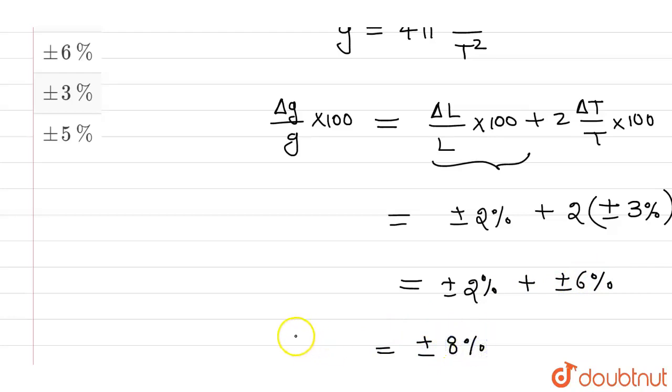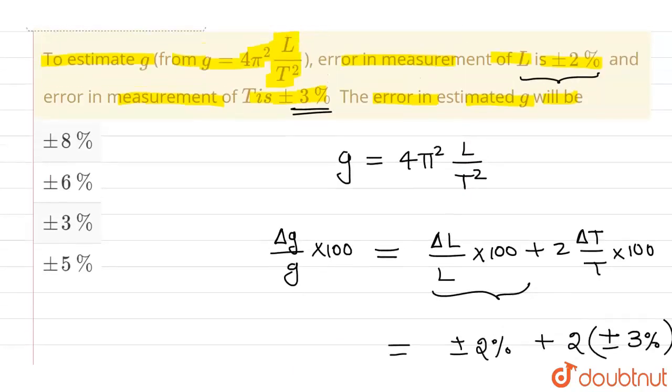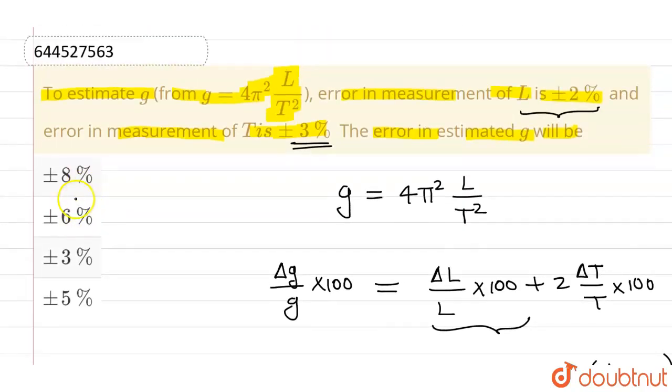So this is the percentage change in the value of g. The correct option is ±8%, which is given in option 1. So option 1 is correct and all other options are incorrect.